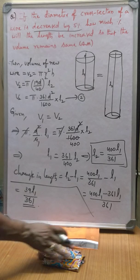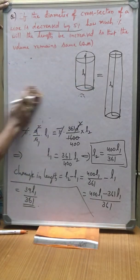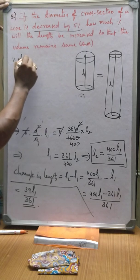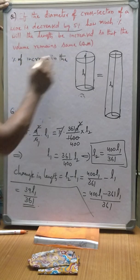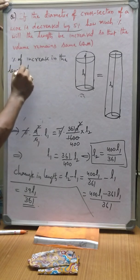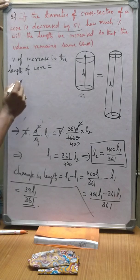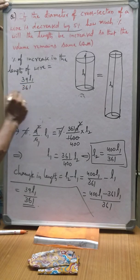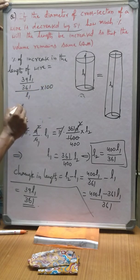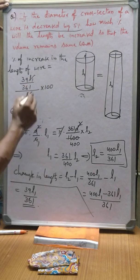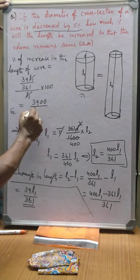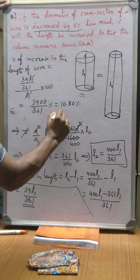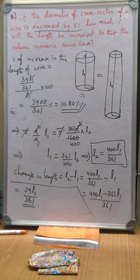Now let us calculate the percentage. Percentage of increase in the length of wire is equal to increase in length divided by actual length into 100, that is equal to 39 L1 by 361 divided by L1 into 100. L1 L1 cancel, 3900 by 361, that is almost equal to 10.80 percentage, which is our required answer. Thank you.